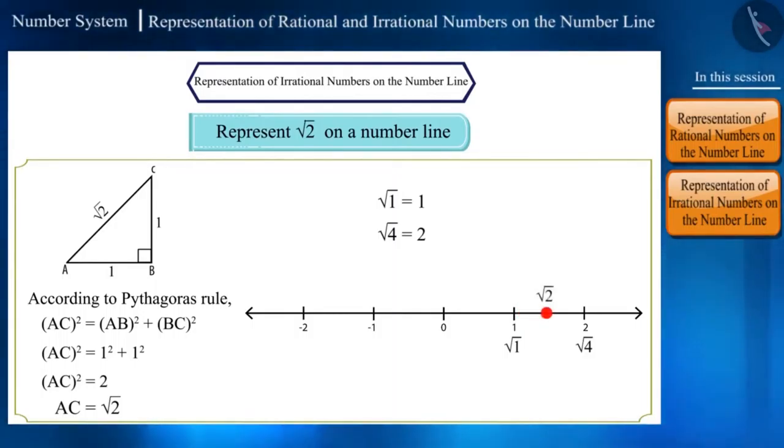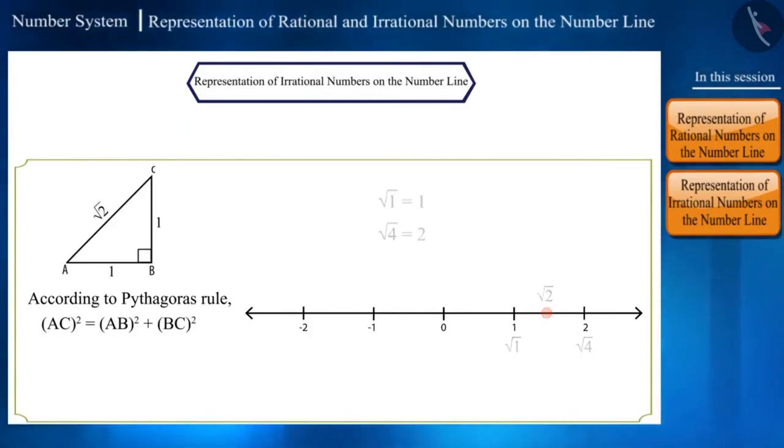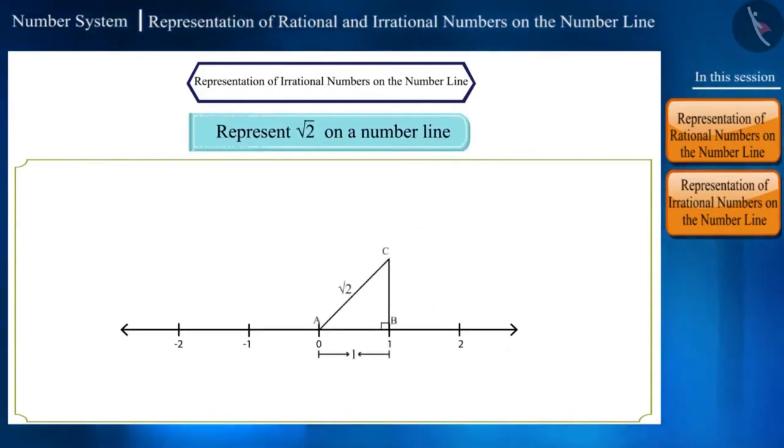Hence, if we have to represent root 2 on the number line, then we will have to construct triangle ABC in such a manner that point A will lie on 0 and point B will lie on number 1 on the number line. We will draw a perpendicular from point B of 1 unit length. So, we get the length of AC as root 2.